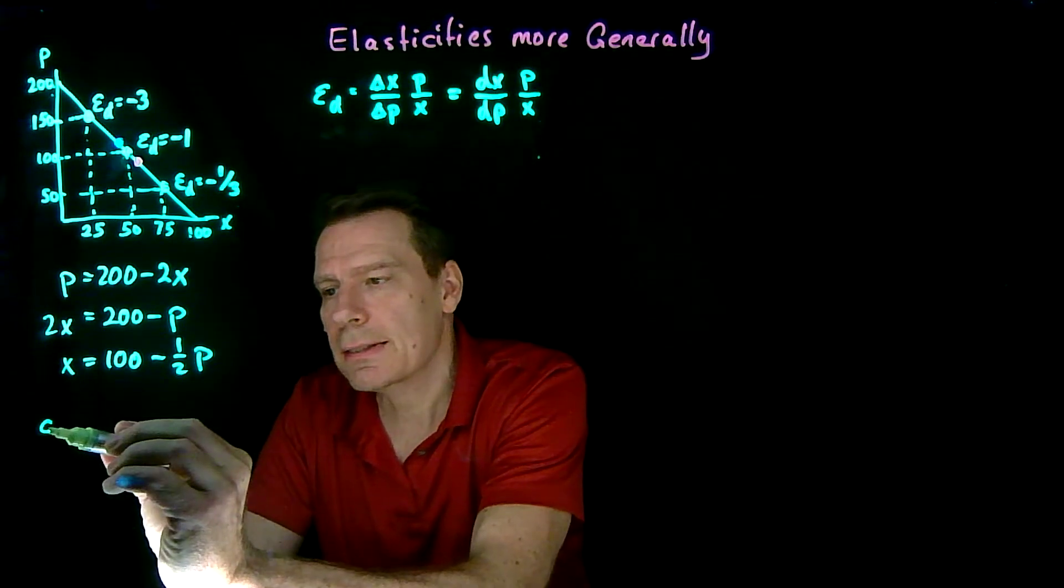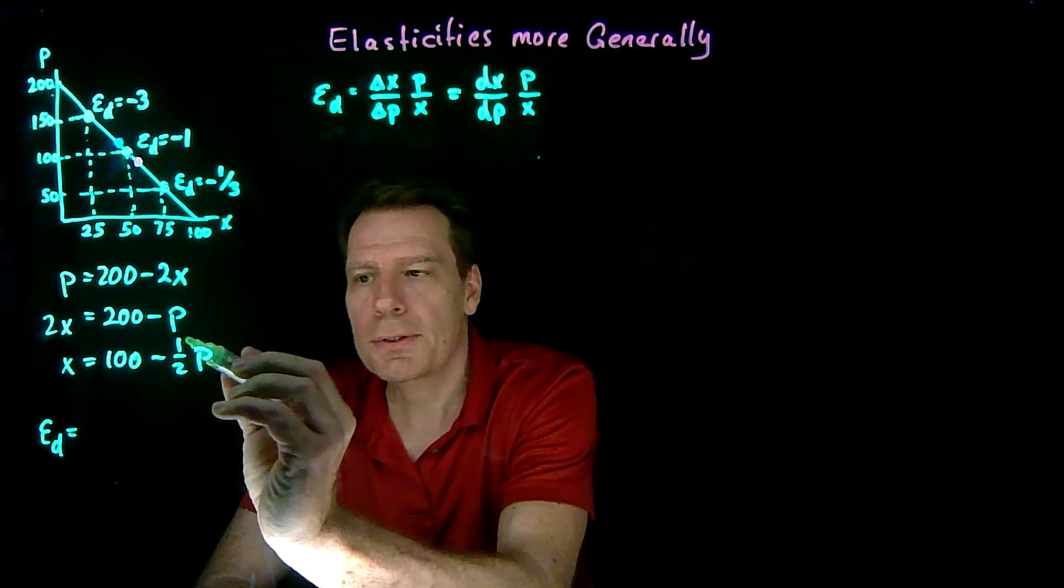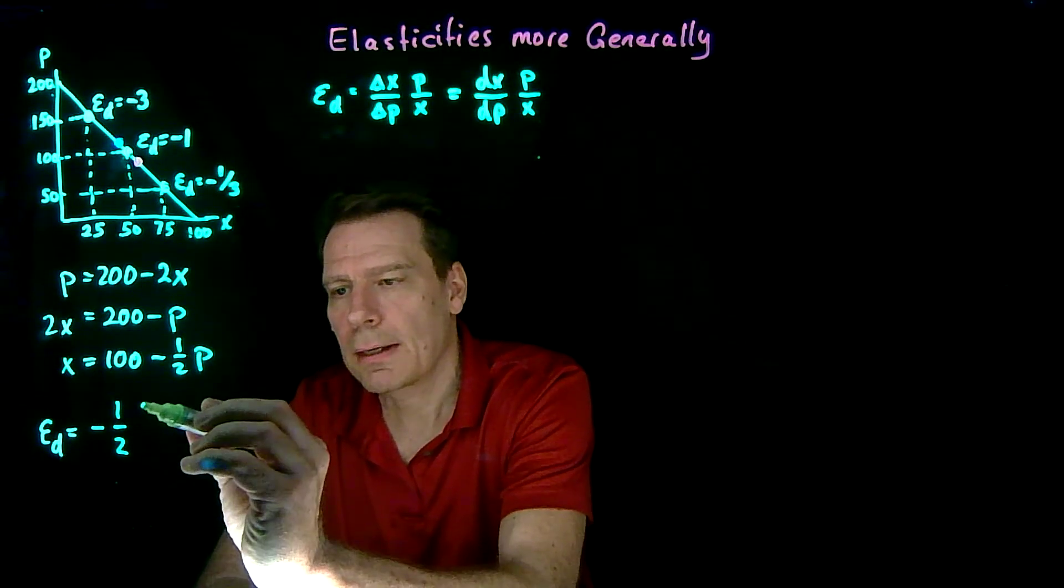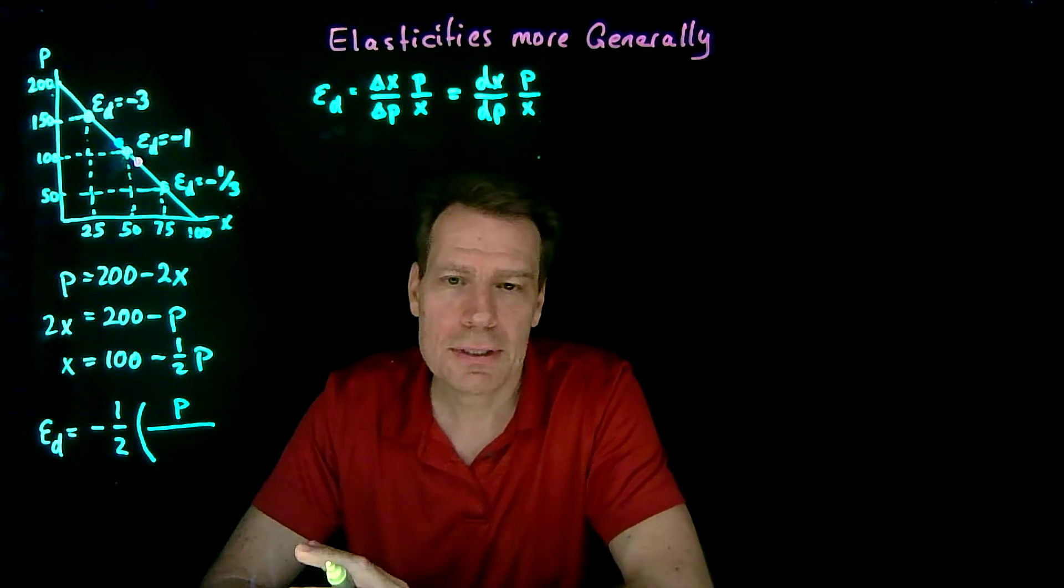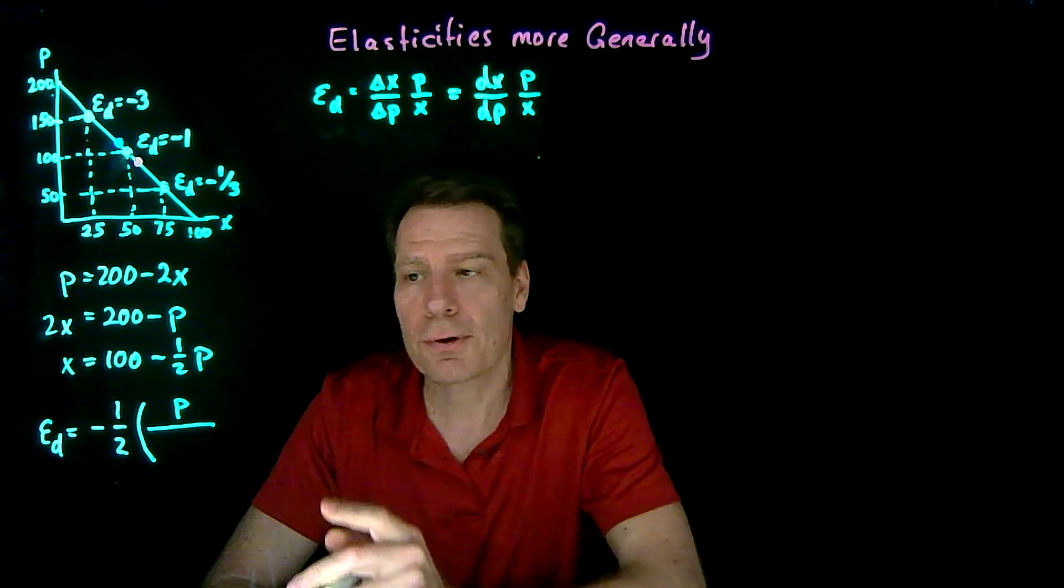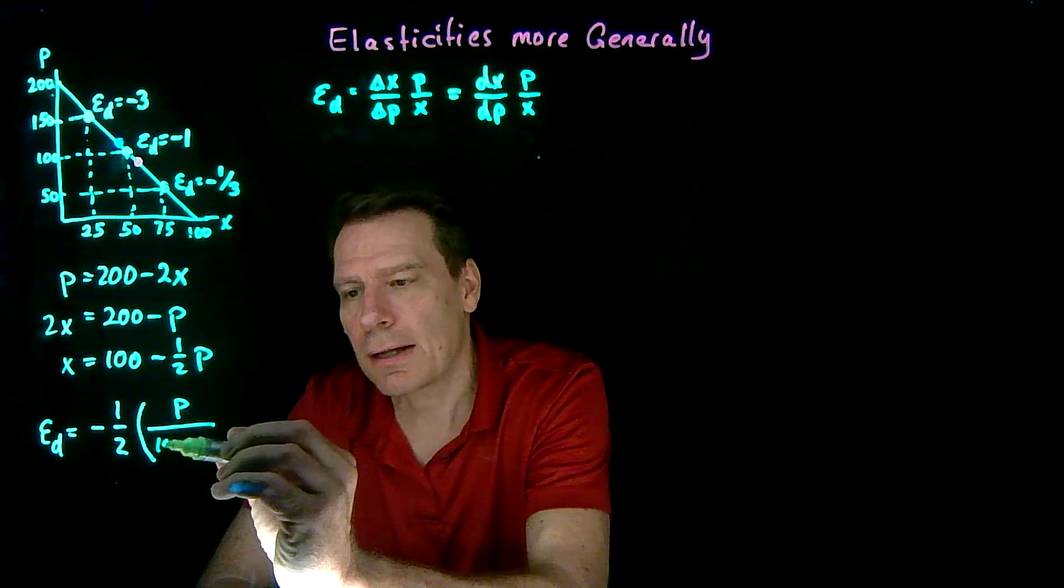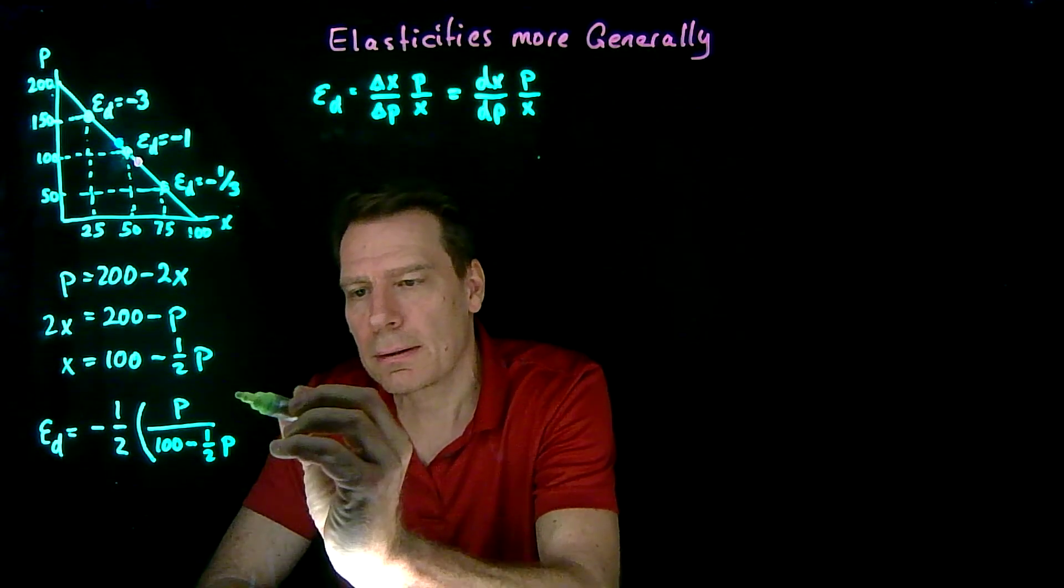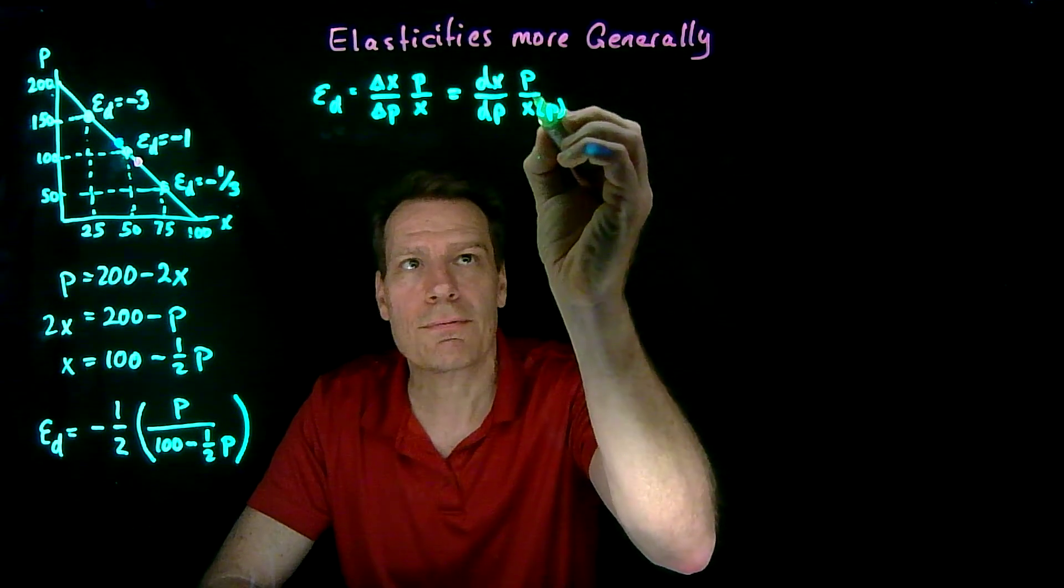So the price elasticity would be equal to the derivative of this, which is just equal to minus 1 half, times p over x, but not just any x, the x that's actually relevant for that price level, which is given by the demand function. So we'll put in 100 minus 1 half p on the bottom. So this here is actually x of p, the demand function.